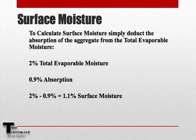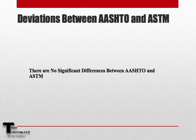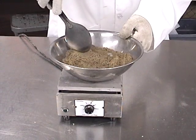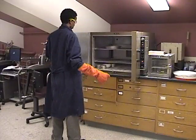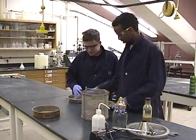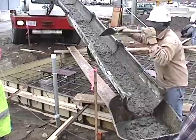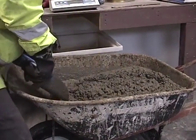Surface moisture is simply the difference between the total evaporable moisture and the absorption of the aggregate. So here, if we had 2% total evaporable moisture and the absorption of our aggregate was 0.9%, we take 2% minus 0.9%, giving us 1.1% surface moisture on our aggregates. Finally, there are no significant differences between AASHTO and ASTM for this procedure, and this will conclude AASHTO T255 and ASTM C566 Total Evaporable Moisture of Aggregates by Drying.